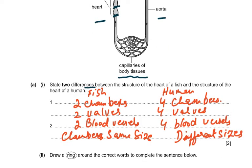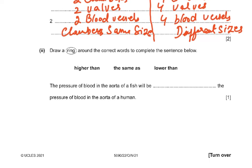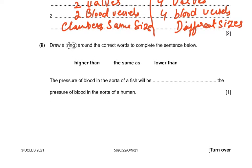To summarize the differences in a table: fish has two chambers versus four in humans, two valves versus four, two blood vessels versus four, and chambers of the same size versus different sizes in humans.